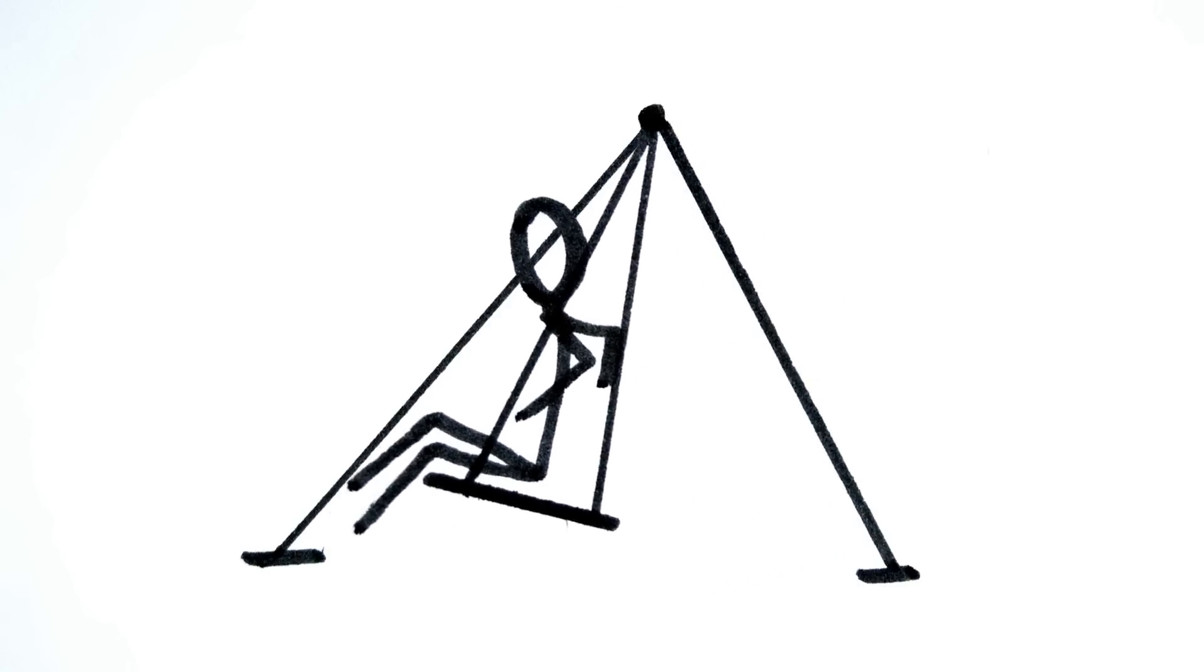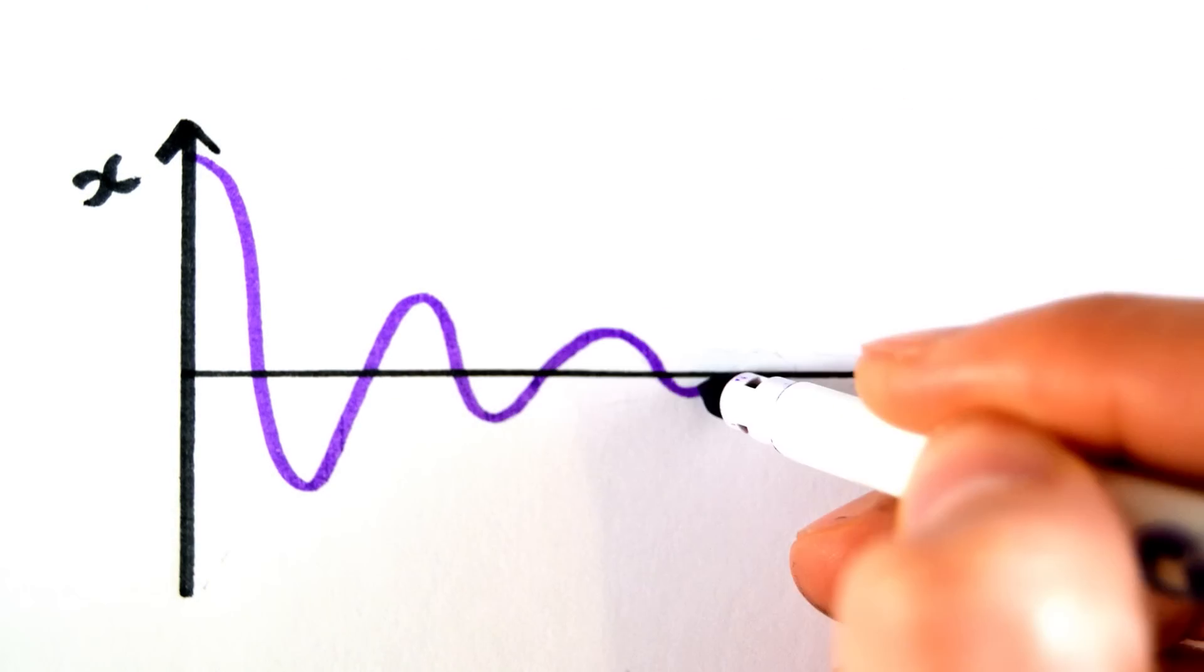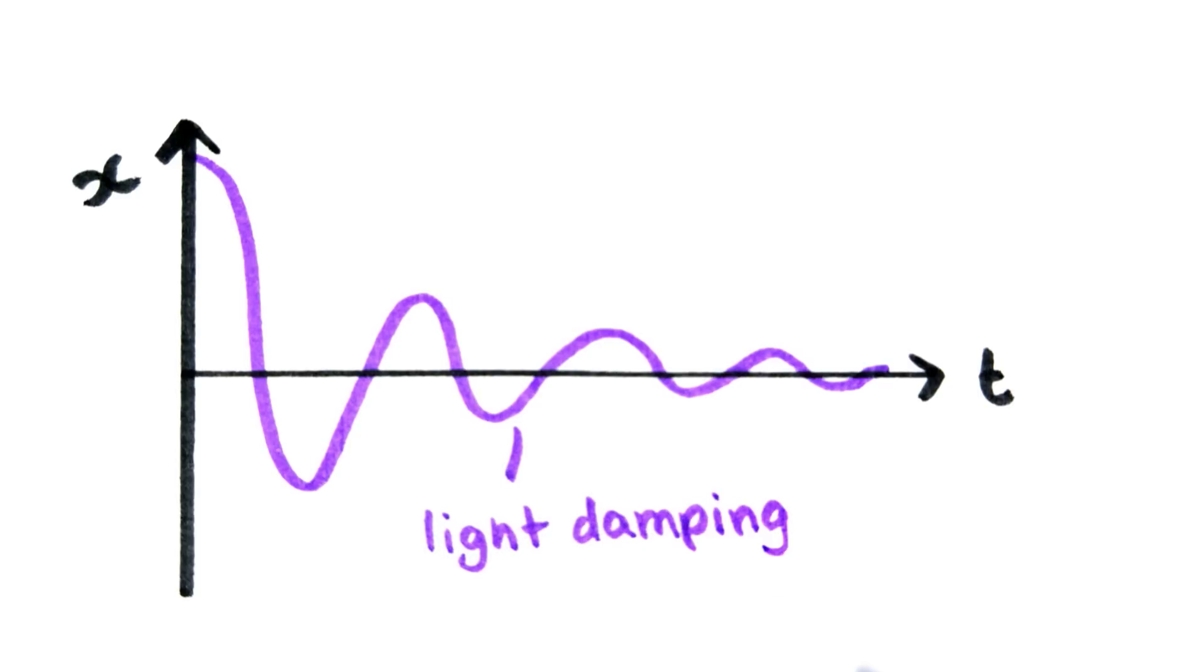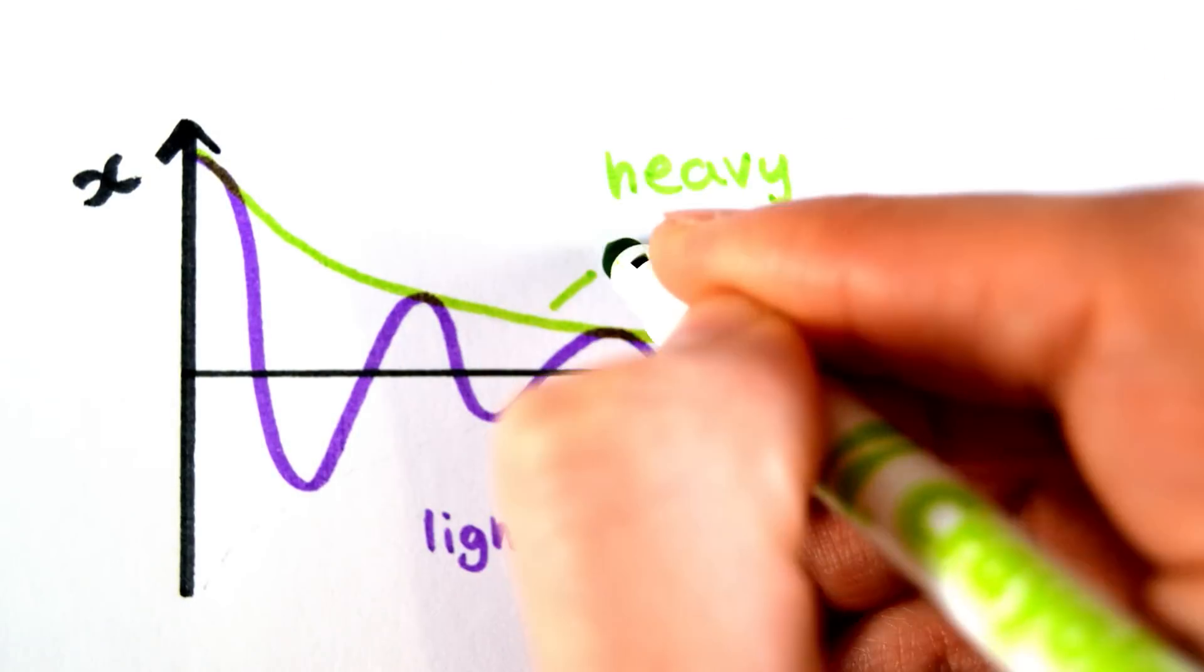If we were to sketch a graph of displacement against time for a damped swing, it would look something like this. This is said to be lightly damped because it continues to oscillate until it comes to rest. There are two other types of damping called heavy damping and critical damping.